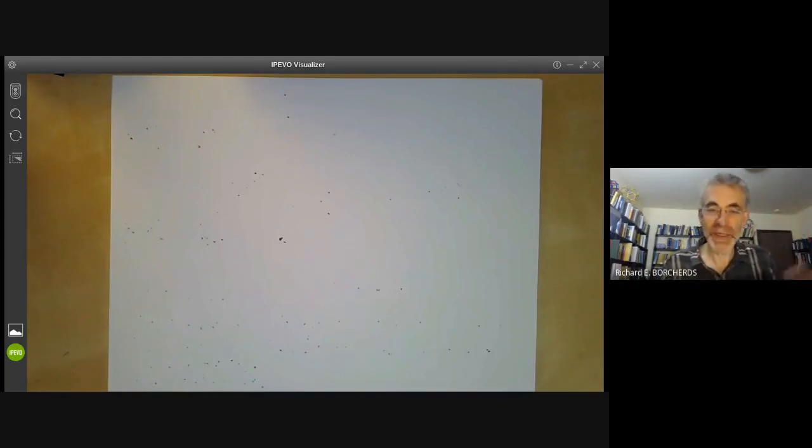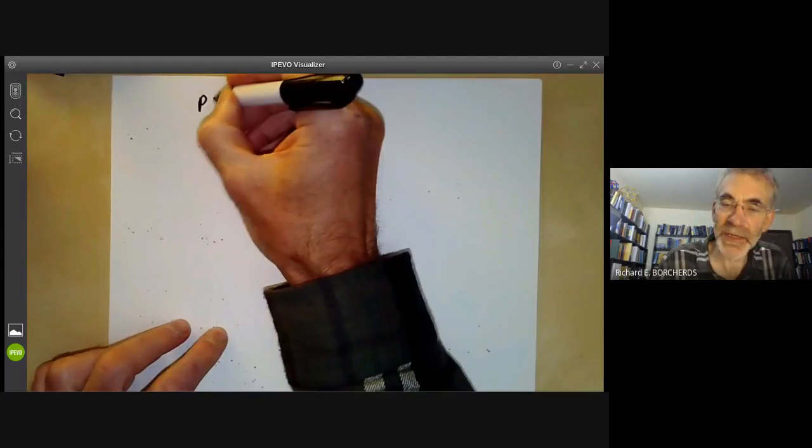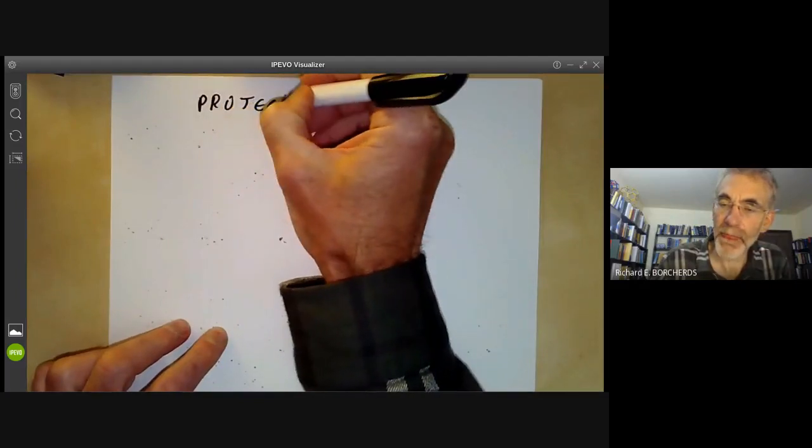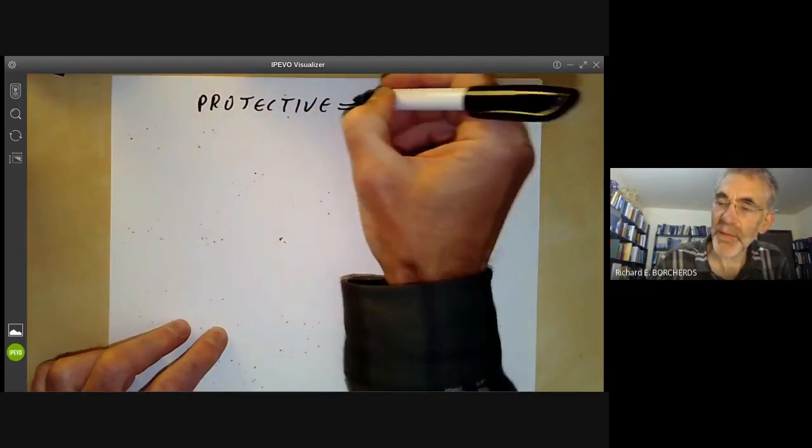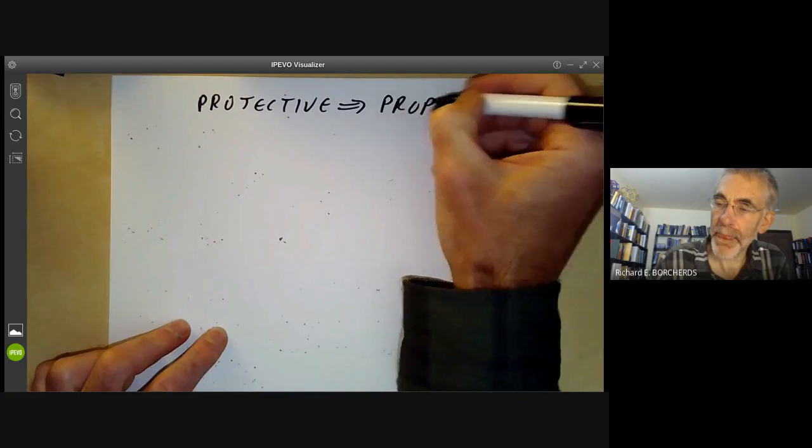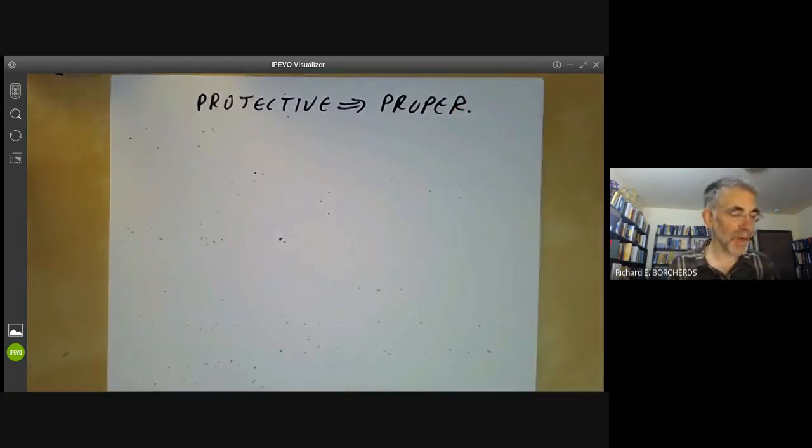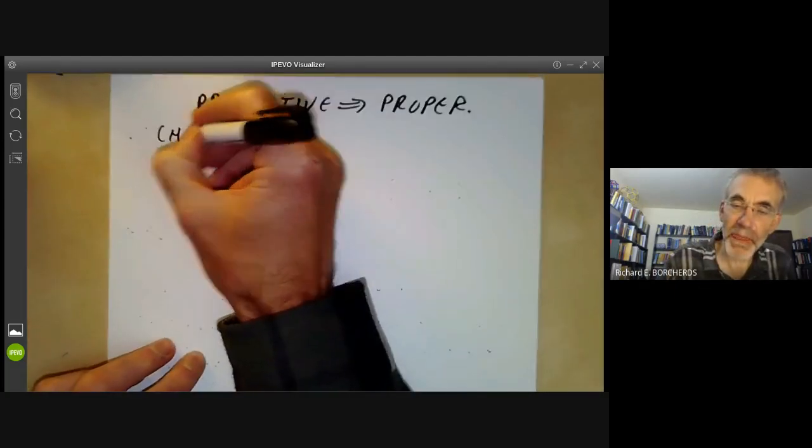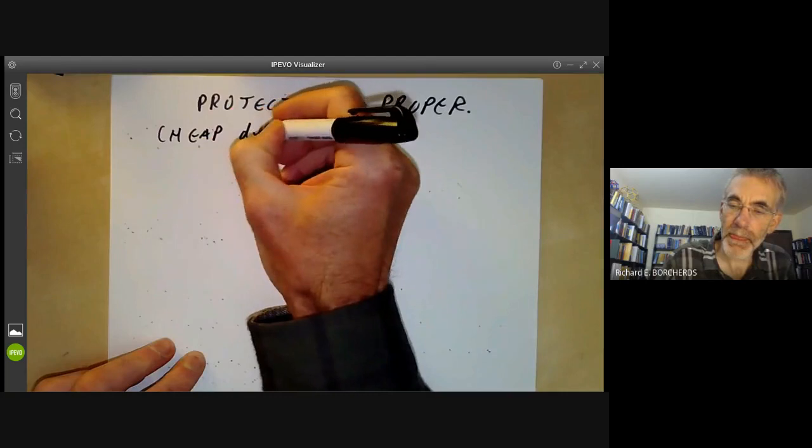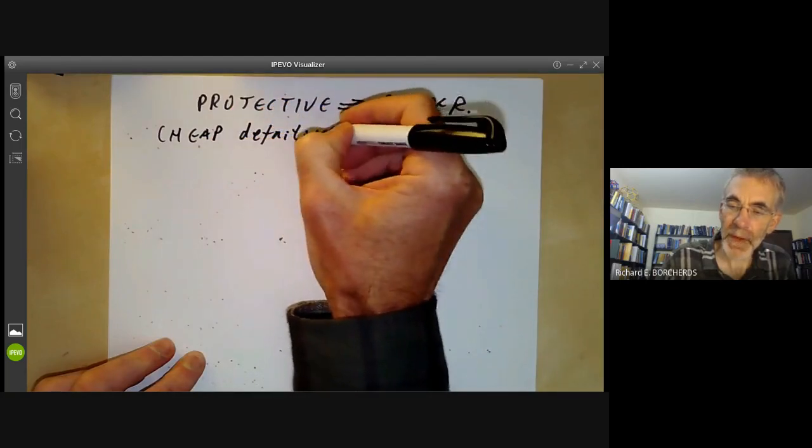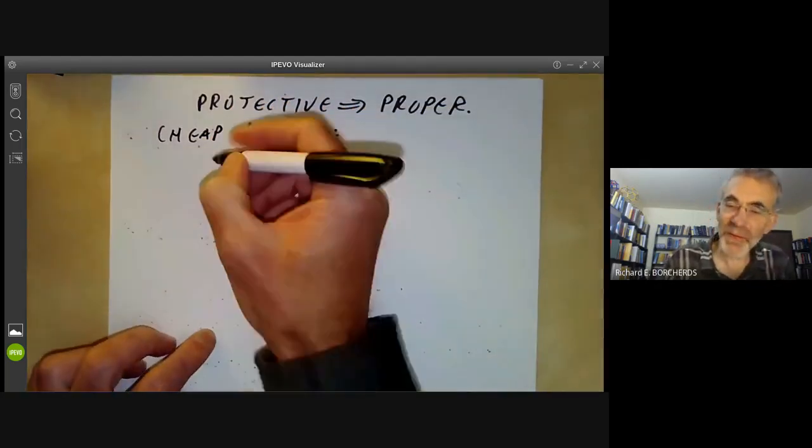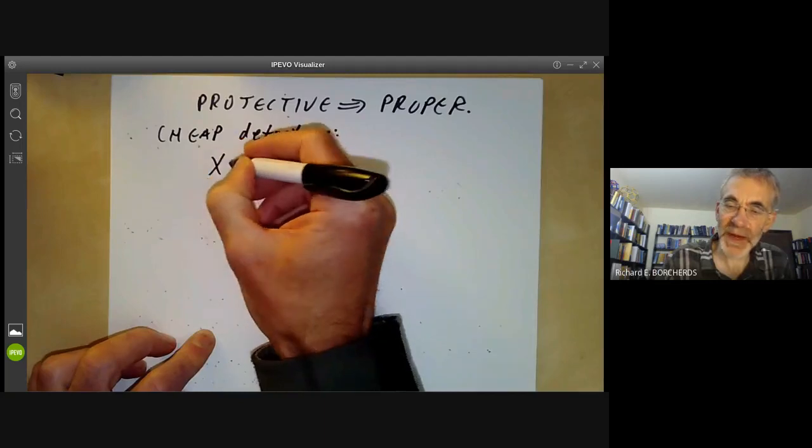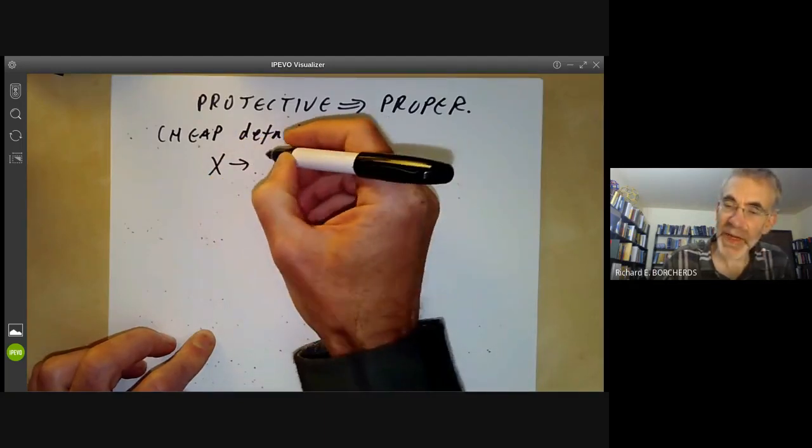What we want to do is sketch how to use this result on valuations to show that projective morphisms are proper. One problem about proving this is I haven't yet told you what projective means. There's a sort of cheap definition.